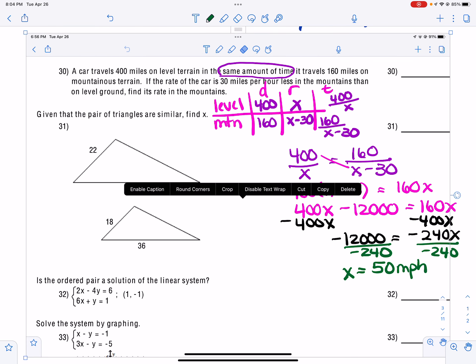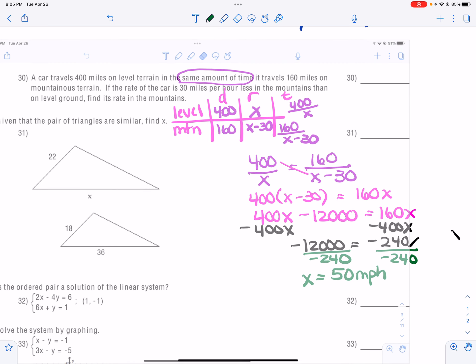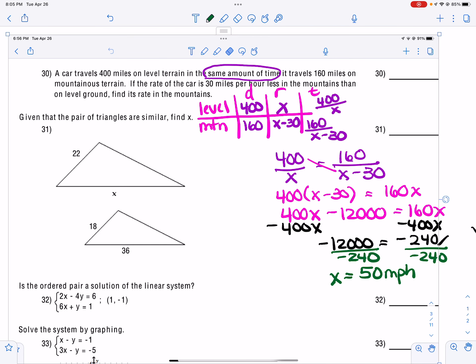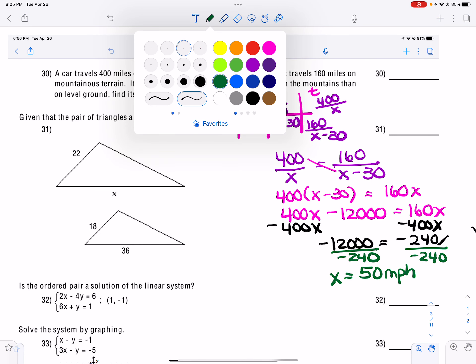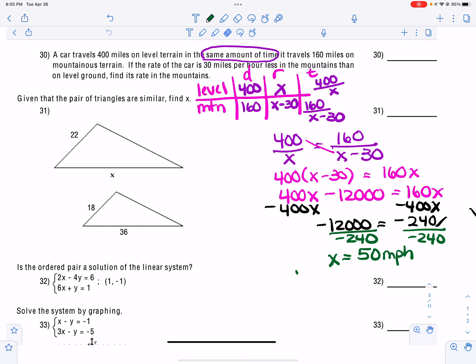And so that says that X comes out to be 50 miles per hour, but that's on level terrain. So right here, that's on level terrain, which was my X. And so to get my mountain, it's going to be 50 minus 30, which says that they were going 20 miles per hour in the mountains.